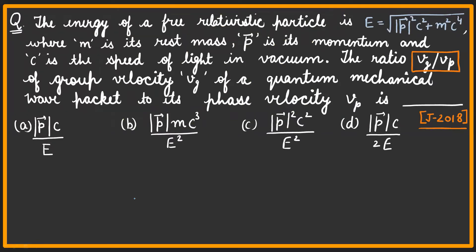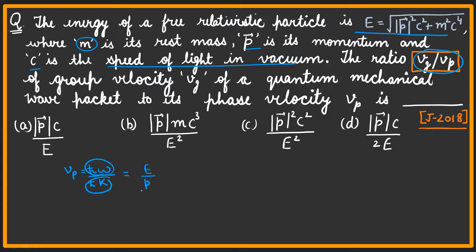The first problem: the energy of a free relativistic particle is given by this relation, where m is rest mass, p is its momentum, and c is the speed of light in vacuum. We have to find out the ratio of group velocity to phase velocity. Phase velocity is ω/k, where ω is the angular frequency and k is the wave vector. We can write it in terms of energy and momentum as E over p, by multiplying and dividing by ℏ, since ℏω is energy and ℏk is momentum.